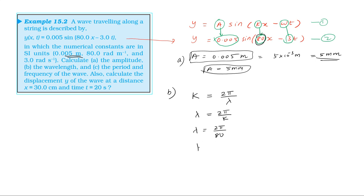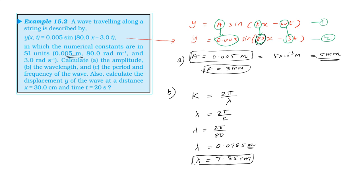For wavelength, lambda equals 2π divided by k, which is 2π divided by 80. The answer is 0.0785 meter. Converting, that is 7.85 centimeters. So the wavelength is 7.85 centimeters.